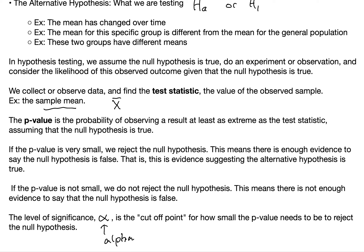If the p-value is not small — if the probability of having a sample of this size with an average graduation time of 5.5 years or more, even though the general population mean is 5 years, is not very small — we do not reject the null hypothesis. This means there is not enough evidence to say that the null hypothesis is false.